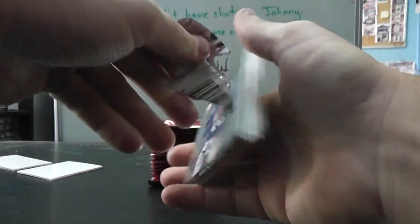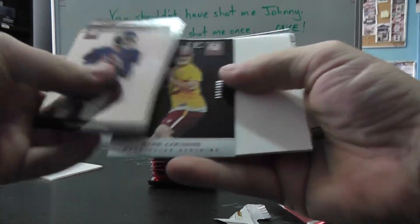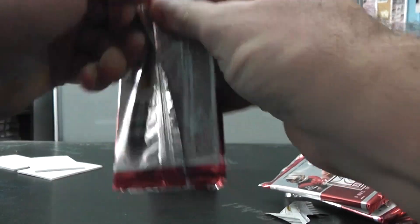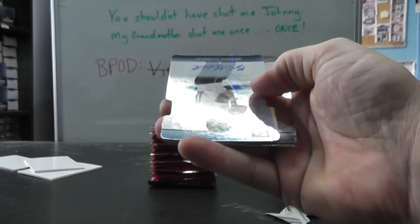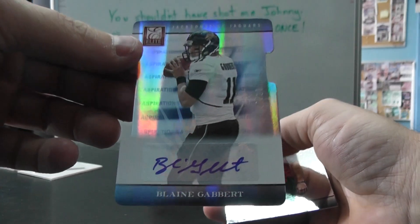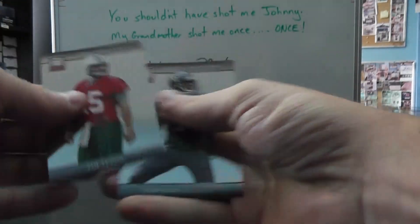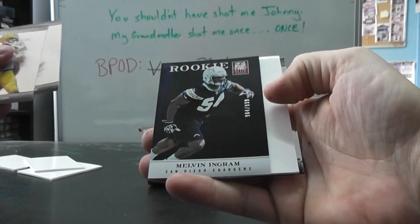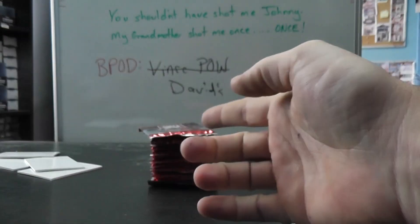Packs don't want to give. Kirk Cousins. Die cut autograph, Blaine Gabbert, numbered 7 of 20. Short print. Melvin Ingram.